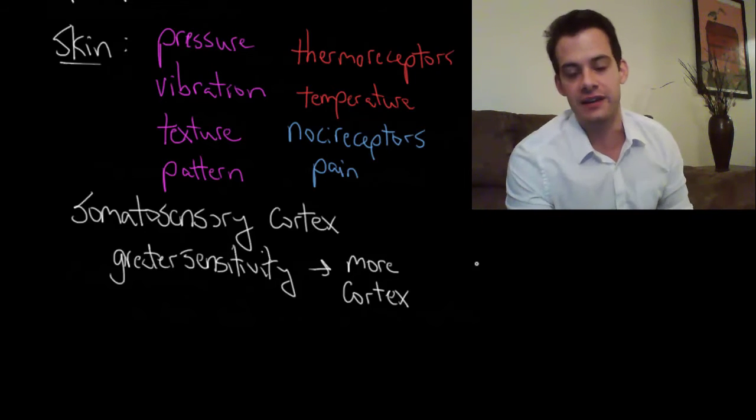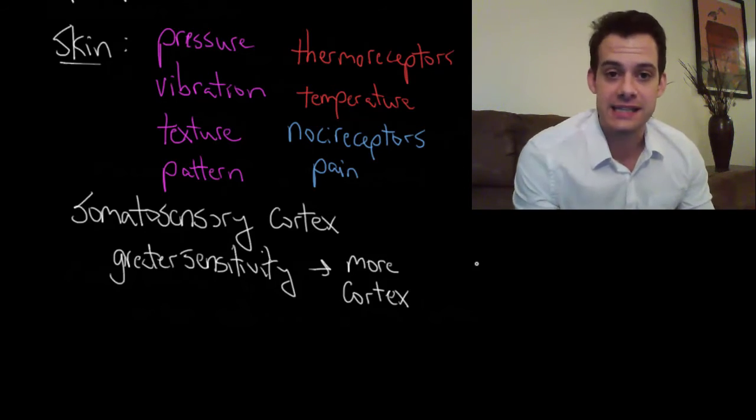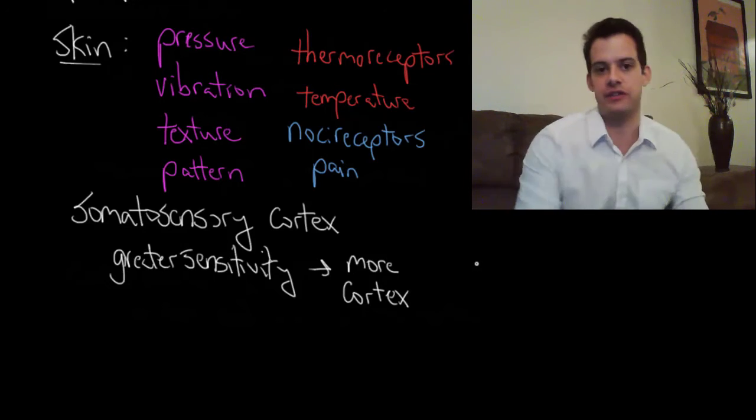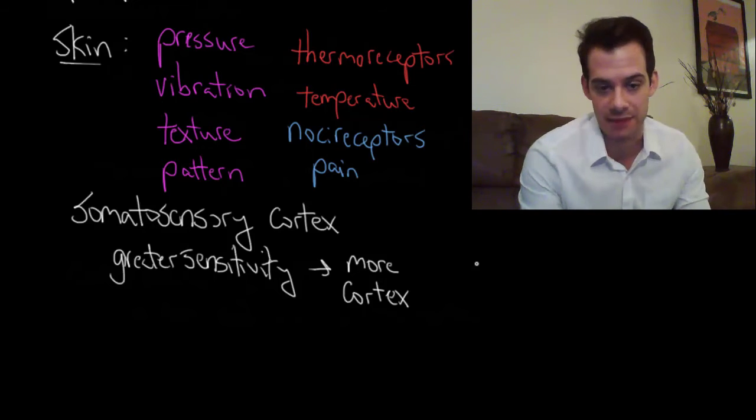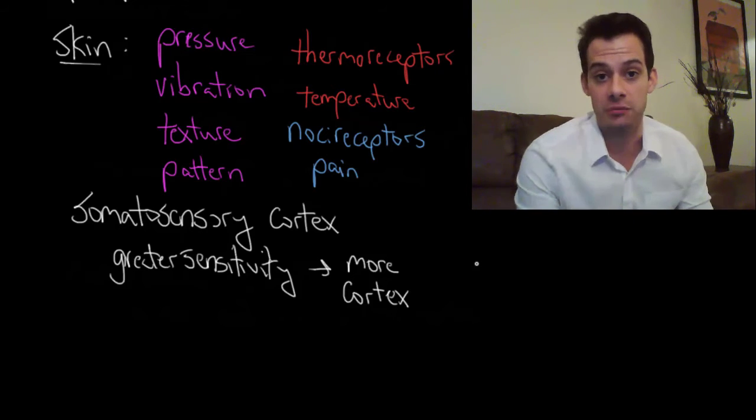That's because you just don't have as many receptors there. It's not as sensitive. And then that means that in your brain you just have less space in your somatosensory cortex for processing information from your back in your skin surface compared to your hands which take up a huge amount of space because they're so sensitive. They have lots of receptors in them and so we need a lot of brain to process that.